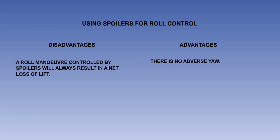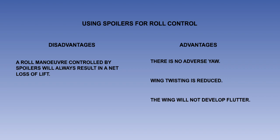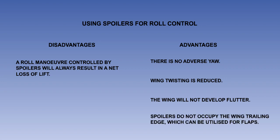However, the spoiler has several advantages over the aileron. There is no adverse yaw — the raised spoiler increases the drag, so the yaw is in the same direction as the roll. Wing twisting is reduced, as the loss of lift is distributed across the chord rather than being concentrated at the trailing edge. It does not suffer from the phenomenon of flutter. Spoilers do not occupy the wing trailing edge, so there is more space available for trailing edge flaps.